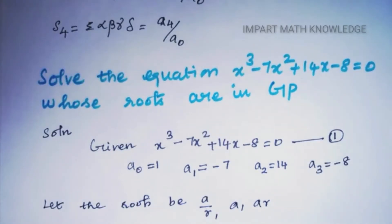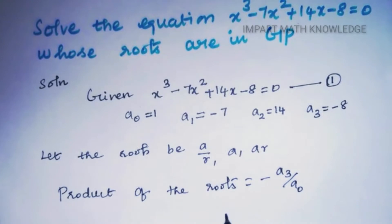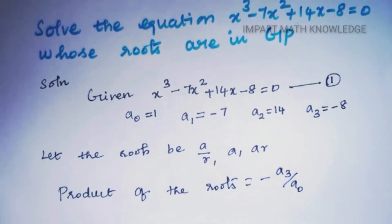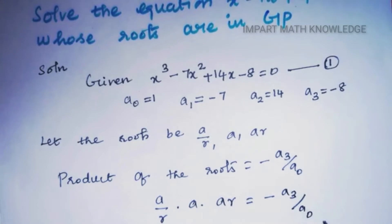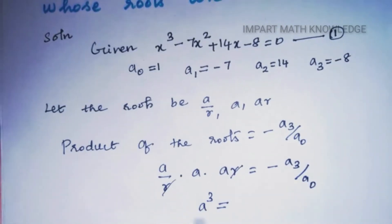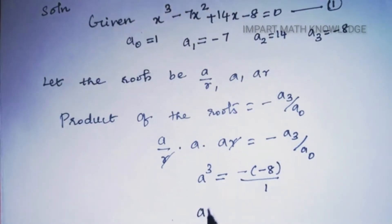Let the roots be a/r, a, ar. We can find the roots using the relation between roots and coefficients. The product of the roots taken 3 at a time is −a3/a0. So (a/r)·a·(ar) = −(−8)/1. The r's cancel, giving a³ = 8, so a = 2.